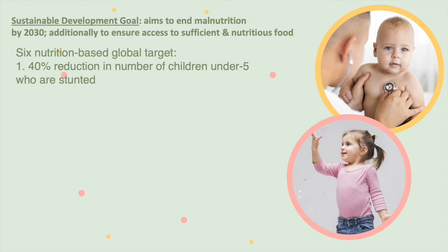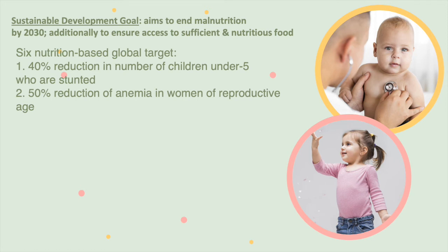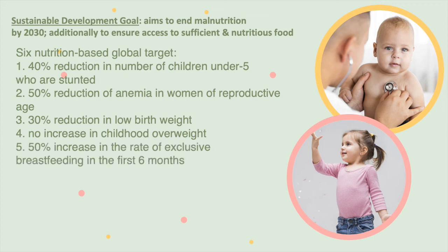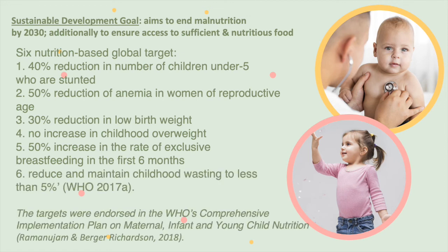Target one: a 40% reduction in the number of children under five who are stunted. Target two: a 50% reduction of anemia in women of reproductive age. Target three: a 30% reduction in low birth weight, which is a huge factor in malnourished infants. Target four: no increase in child overweight. Target five: a 50% increase in the rate of exclusive breastfeeding in the first six months of an infant's life. Target six: to reduce and maintain childhood wasting to less than 5%. These sustainable development goals are published by the World Health Organization.